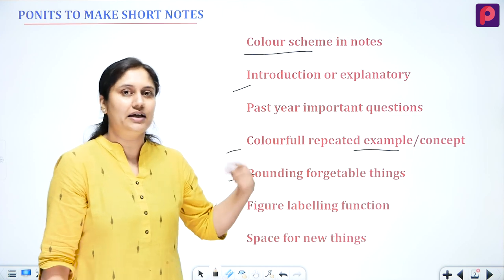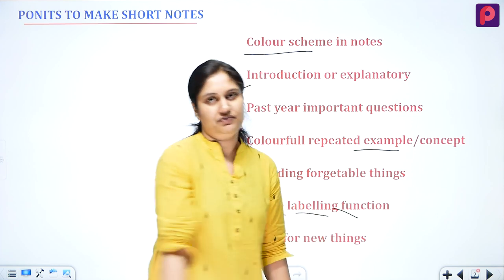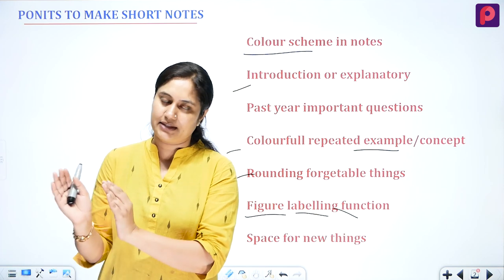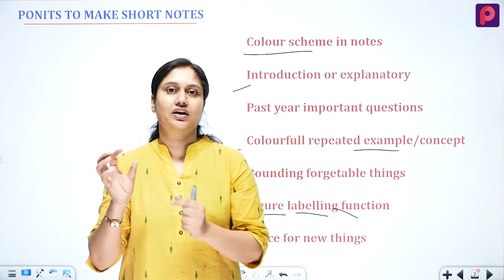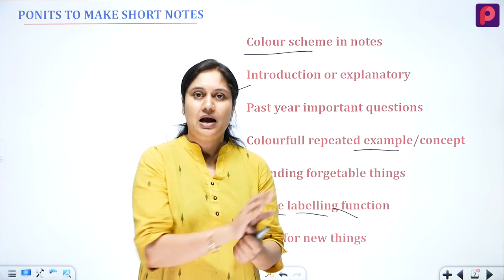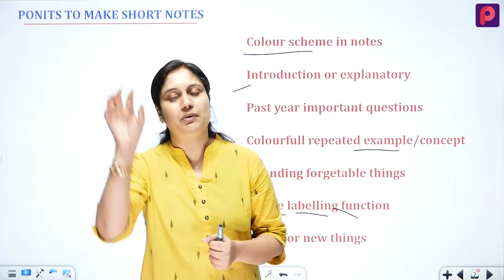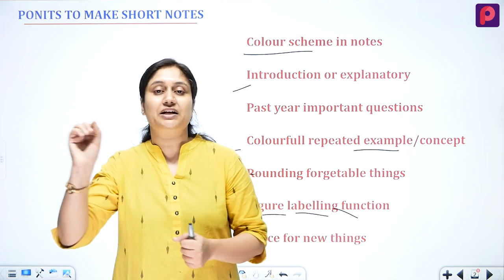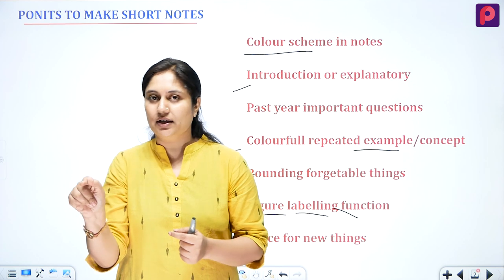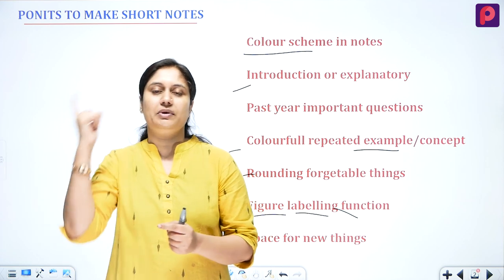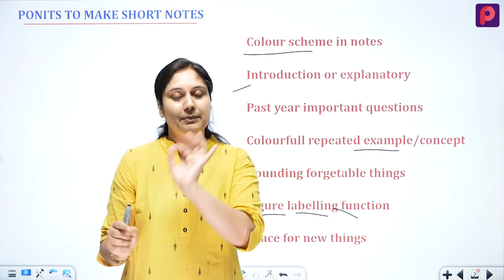The next thing is figure labeling and function. You will see many diagrams in your NCERT. In those diagrams, which organ has which function — we have written that in the explanation. But for short notes, we need to make it click in the mind. So when we are labeling a diagram, alongside the particular organ's name we will write in a small word what its function is. As we see the name and labeling, the function will click in our mind. This is the way to make a short note.